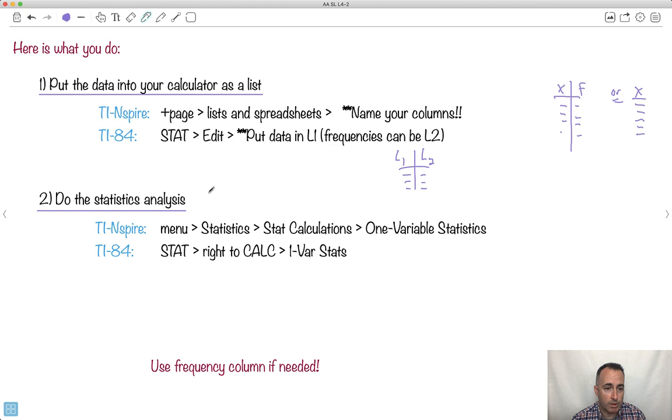Now, the idea to do the analysis, from the TI Inspire, you just press menu, go to statistics, do some calculations, and you always do one variable, even if you have two columns, because you're still doing it for one variable, the second column is just the frequency. So you actually always just do one variable.